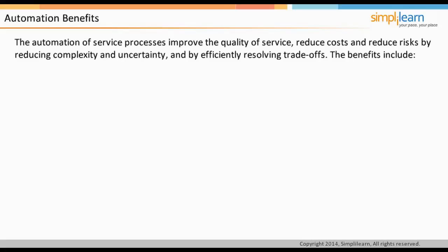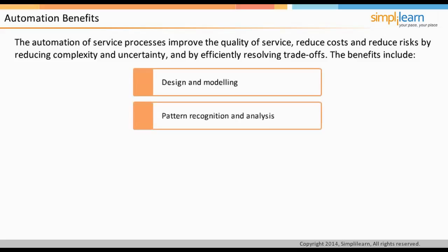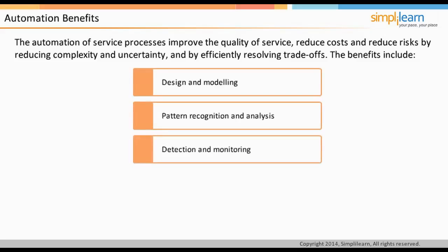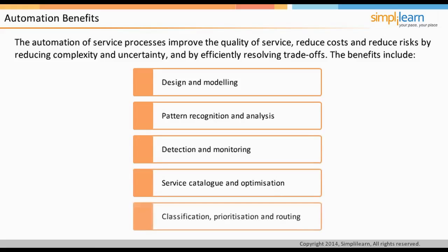The automation of service processes helps improve quality of service, reduce costs, and reduce risks by reducing complexity and uncertainty. Areas where service management can benefit from automation include design and modeling (what-if analysis), pattern recognition and analysis of service issues, detection and monitoring of events and alerts, an online service catalog, optimization of services and underlying technology, and classification, prioritization, and routing of incident, problem, and change tickets.